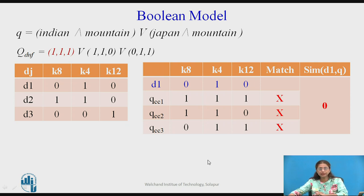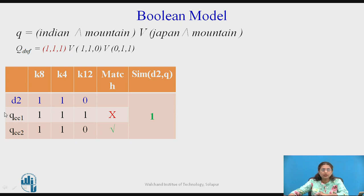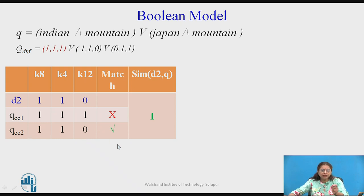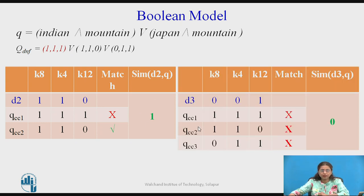For document D2, the weight vector for these keywords is 1 1 0. QCC component 1 (1 1 1) is not matching. Going to the second component — it is matching with 1 1 0. As stated in the formula, at least for one component all keywords' weights must match. Since one component has been matched, we do not need to go to the third component, and therefore the similarity of D2 is 1. For document D3, the weight vector is 0 0 1. QCC components 1, 2, and 3 are not matching at all, so the similarity is 0.